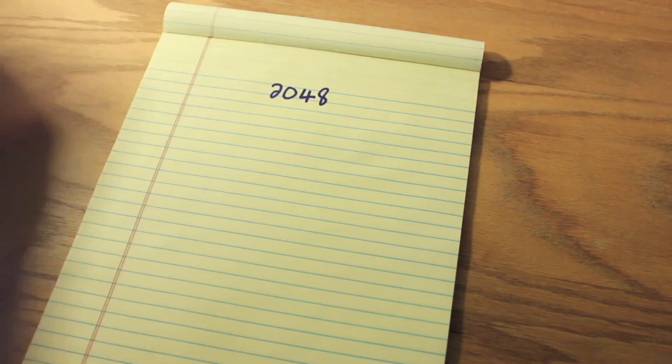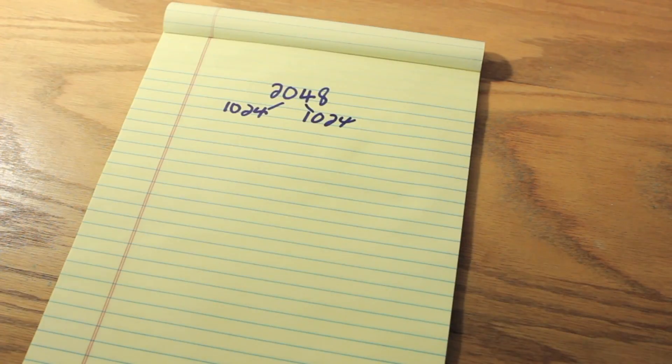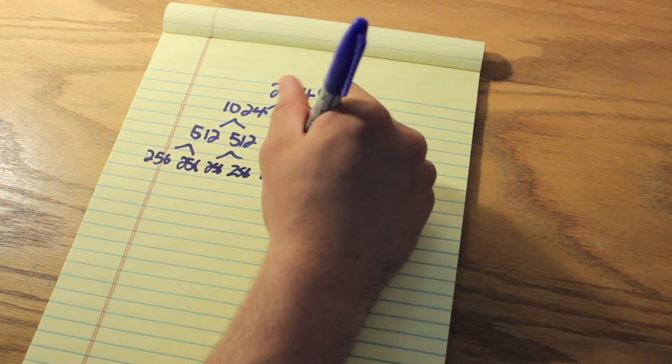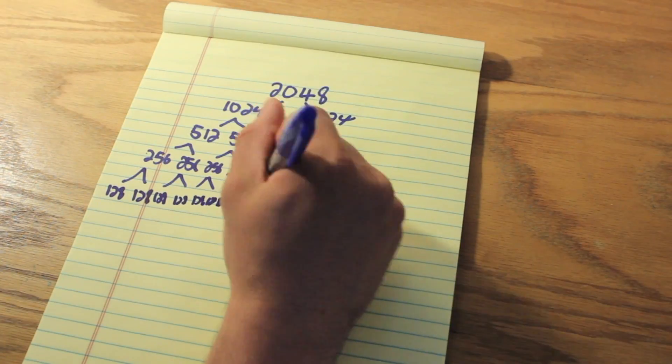Well, to start, by the definition of the game, you need two tiles that are 1024. That means you need four tiles of 512, and each of those would take 256 tiles, and so on and so on. So if you do this all out, you find that you need 1024 two tiles.